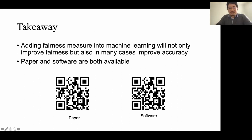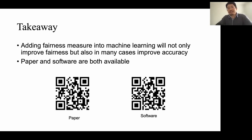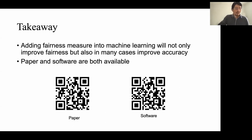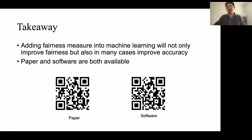For those with a computer science background, implementation is the most important part of this project. There are several packages available online for machine learning, but if you want to add this fairness feature, you have to develop something on your own — though in many cases you can use existing packages and write additional code. The implementation helps a lot.